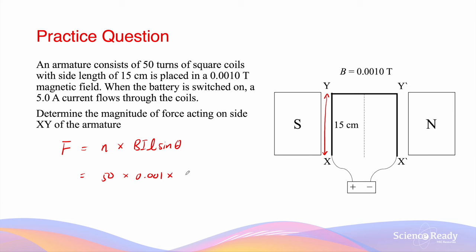Multiplied by the current of 5 Amperes, times the length of conductor XY which is 0.15 metres. This is further multiplied by sin theta. The angle theta here is the angle between the magnetic field and the conductor, which is perpendicular — so 90 degrees. This gives a value of 0.0375 Newtons.